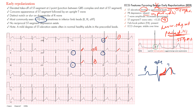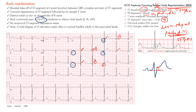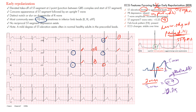The ST/T wave ratio is assessed in lead V6. Measure the height of the ST segment elevation — say 2mm — and divide by the amplitude of the T wave — say 5mm. That gives 0.4. If that ratio is greater than or equal to 0.25, it suggests pericarditis. In early repolarization, the ratio should be less than 0.25.